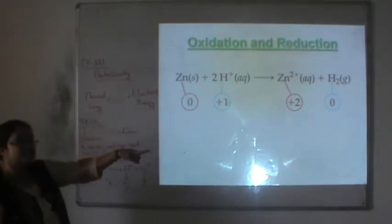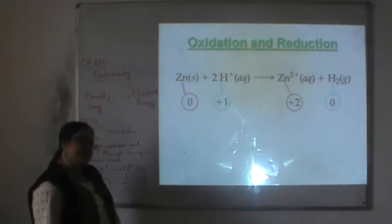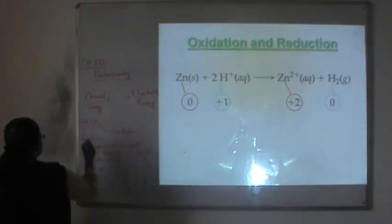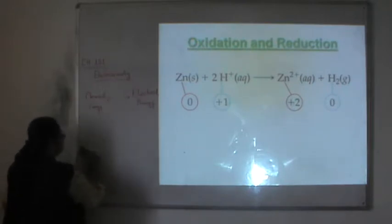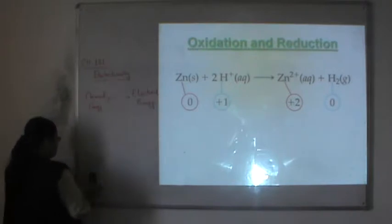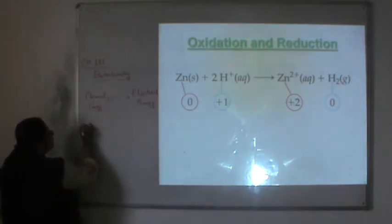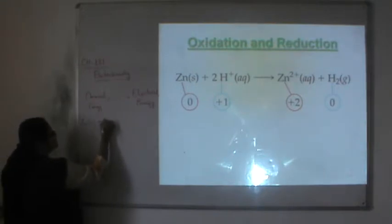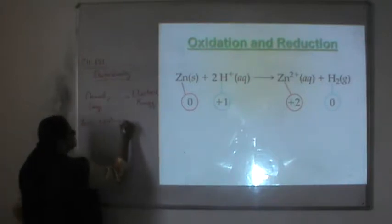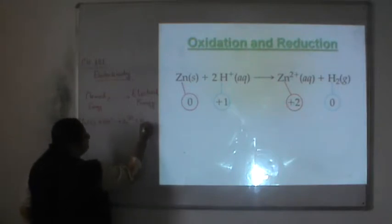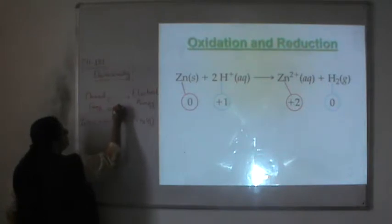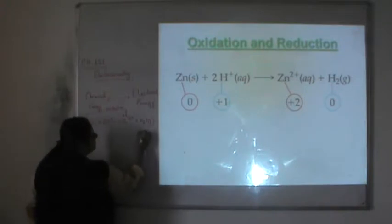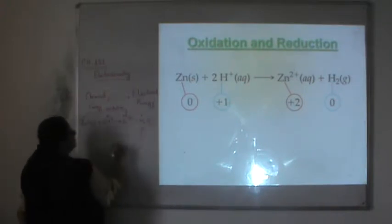For hydrogen, the oxidation number changes from plus one to zero. This lowering of oxidation number is called reduction.